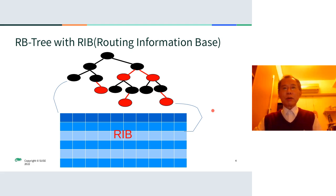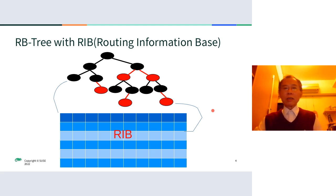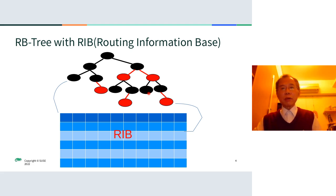This is the first example of a red-black tree application. In networking, most networking devices actually cover two key components, which are the data plane and the control plane. For example, the routing information base is located in the control plane, and they are also implemented in real-time kernels like VxWorks or Linux. They try to use the red-black tree as their index file so they can faster search, add, or delete routing entries.